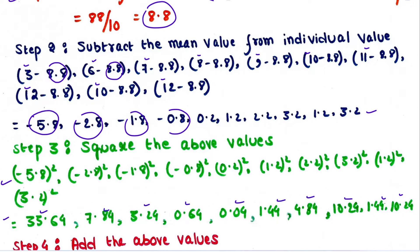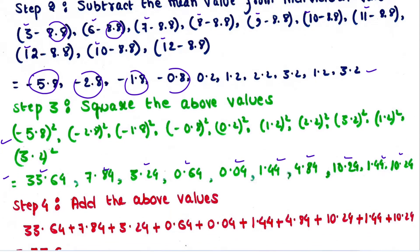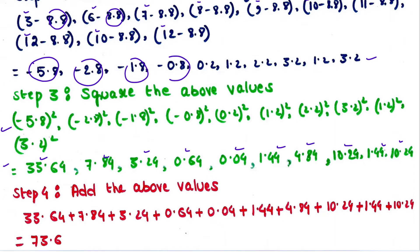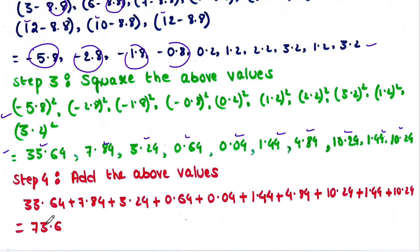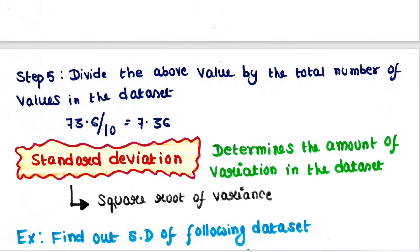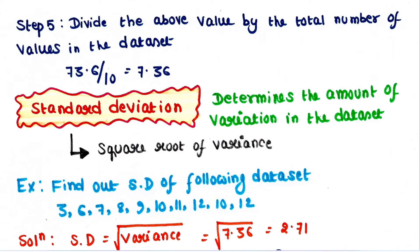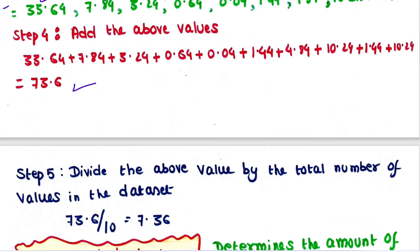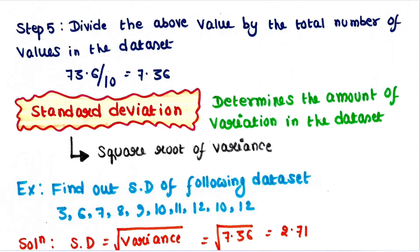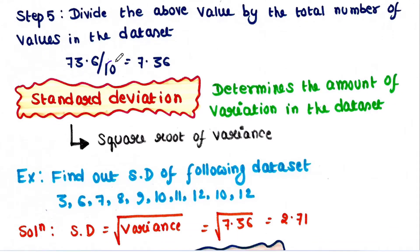Step 4: we add all the squared values, and the total is 73.6. Step 5: we divide that value, 73.6, by the total number of values in the data set, which is 10. We get 7.36. So 7.36 is the variance. This is how we calculate variance.